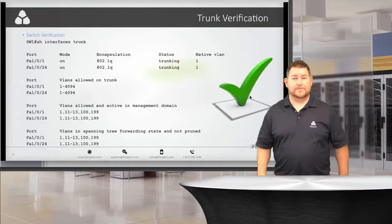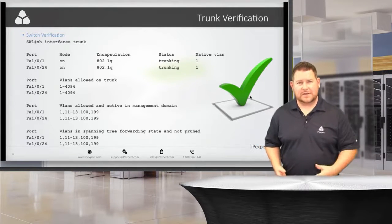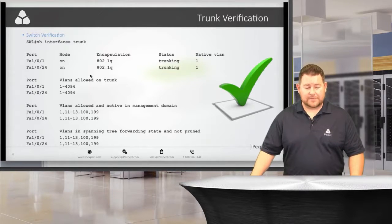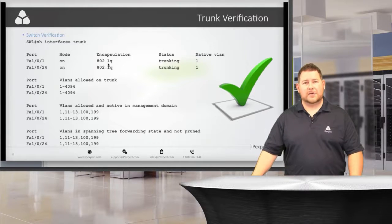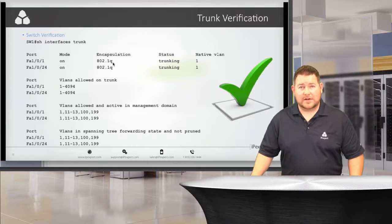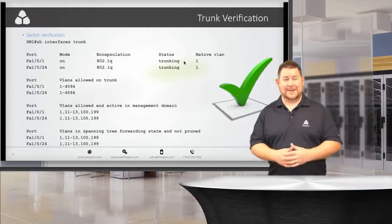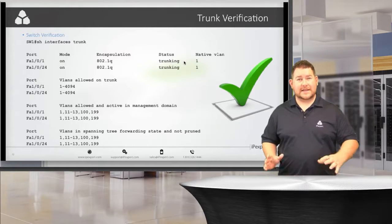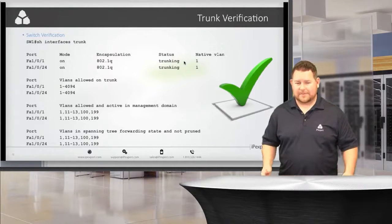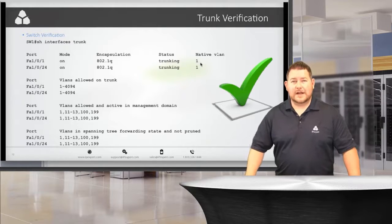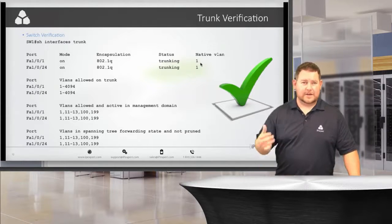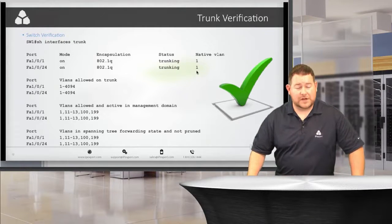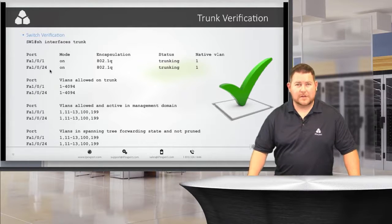To verify the trunk, use 'show interfaces trunk.' For fa1/0/1, we can see the encapsulation is 802.1Q — great. The status shows 'trunking' — also great. The native VLAN is 1 by default. This is a good place to check if something's been changed on you. The other trunk, fa1/0/24, is the backbone trunk. The next section shows VLANs allowed on the trunk — another area where they could disallow VLANs you need, breaking communication between your switch and router.